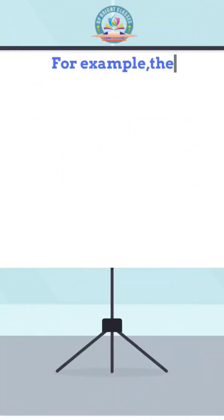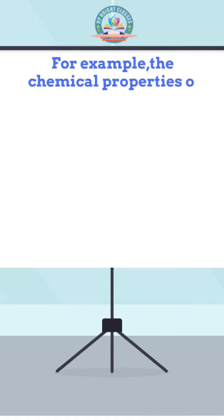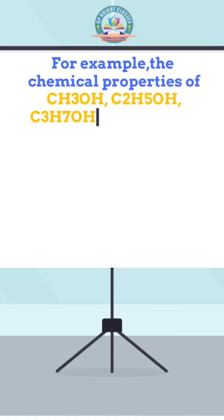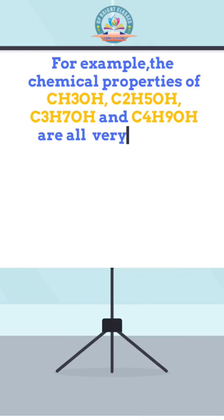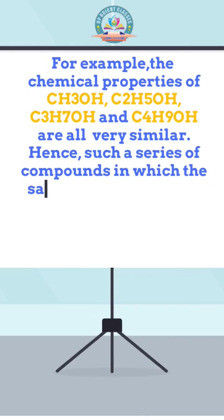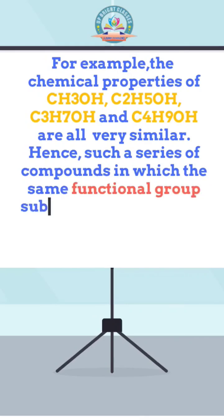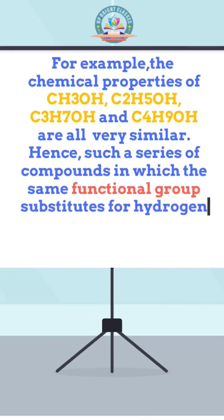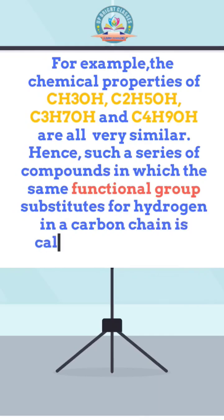For example, the chemical properties of CH3OH, C2H5OH, C3H7OH, and C4H9OH are all very similar. Hence, such a series of compounds in which the same functional group substitutes for hydrogen in a carbon chain is called a homologous series.